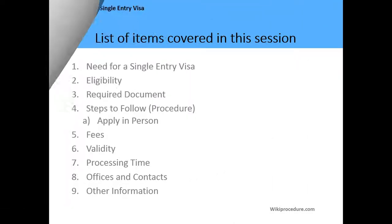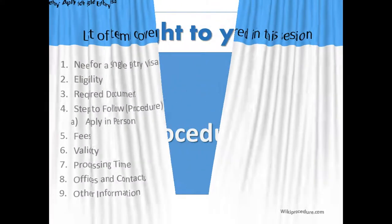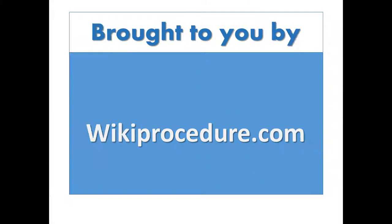The list of items which we are going to cover in this session include: the need for the single entry visa, the eligibility criteria, the required documents, steps to follow in making the application, the fees, validity period, processing time, office location and contact information, and any other relevant information on how to apply for the single entry visa in Kenya. Welcome to our presentation today, brought to you by wiki procedure dot com.